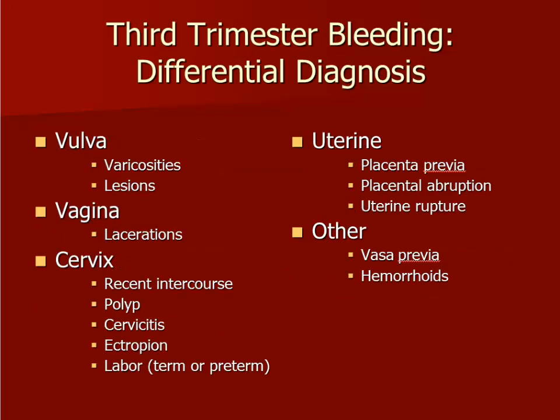The differential diagnosis for third trimester bleeding is long, and the cause of bleeding may or may not be related to the pregnancy. However, bleeding that occurs in pregnancy should be assumed to be pregnancy-related until proven otherwise.